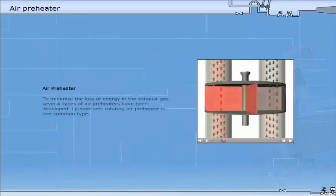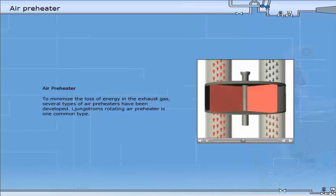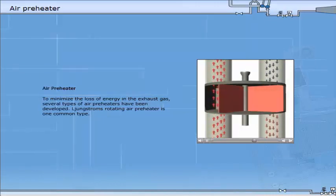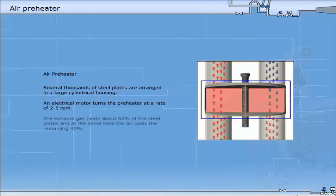To minimise the loss of energy in the exhaust gas, several types of air preheaters have been developed. It is a common type. Several thousands of steel plates are arranged in a large cylindrical housing. An electrical motor turns the preheater at a rate of 2 to 5 revolutions per minute. The exhaust gas heats about 60% of the steel plates and at the same time the air cools the remaining 40%.